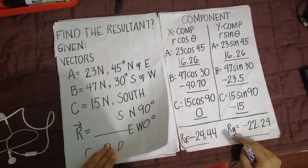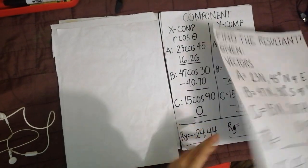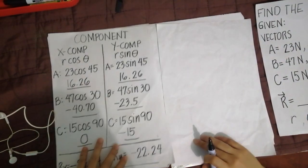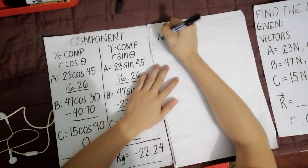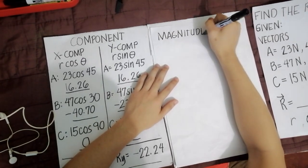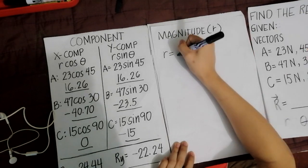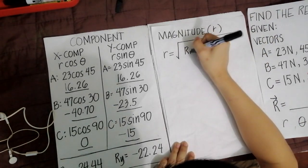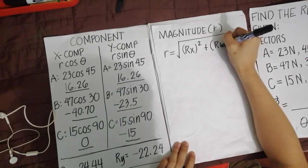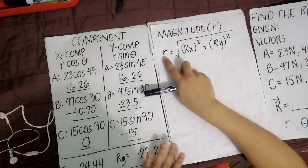Ngayon, kailangan natin malaman yung final magnitude and final angle and theta together with the direction. So gagamit tayo ng formula. After natin makuha yung Rx, meron tayo dito class, may formula tayo to get the magnitude. Magnitude or yung R natin, small letter R. The formula to get the magnitude is this. R is equal to square root of Rx squared, raise 2 natin yung Rx, then plus Ry squared. So ito yung paraan para makuha natin yung final magnitude ng resultant vector natin.